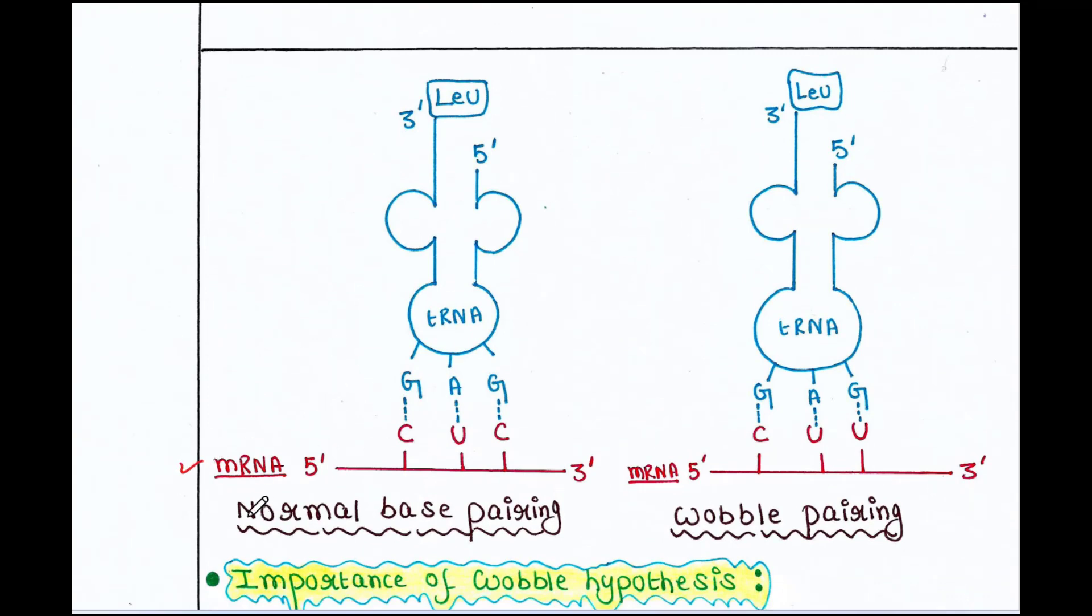So, this is the mRNA and we have here the tRNA. Here, this is a codon. CUC contains three nucleotides. One codon contains three nucleotides. CUC. So, this codon base pairs with the anticodon.